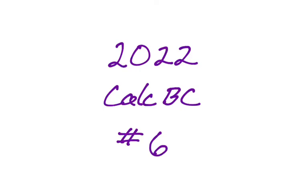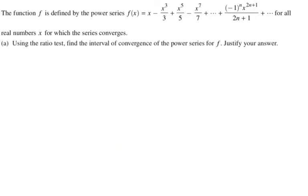Okay, in this video we're going to do number 6 from the 2022 Calc BC exam, and it is the series question. So, the function f is defined by the power series f of x equals x minus x cubed over 3 plus x to the 5th over 5 minus x to the 7th over 7 plus dot dot dot plus negative 1 to the n, x to the 2n plus 1 over 2n plus 1 plus dot dot dot for all real numbers x for which the series converges.